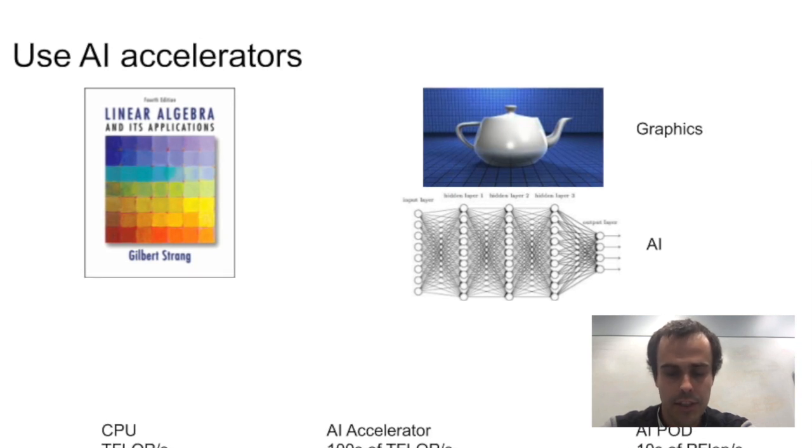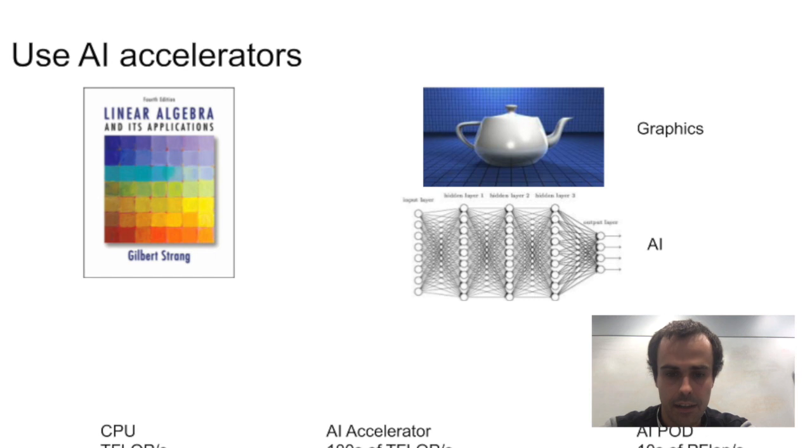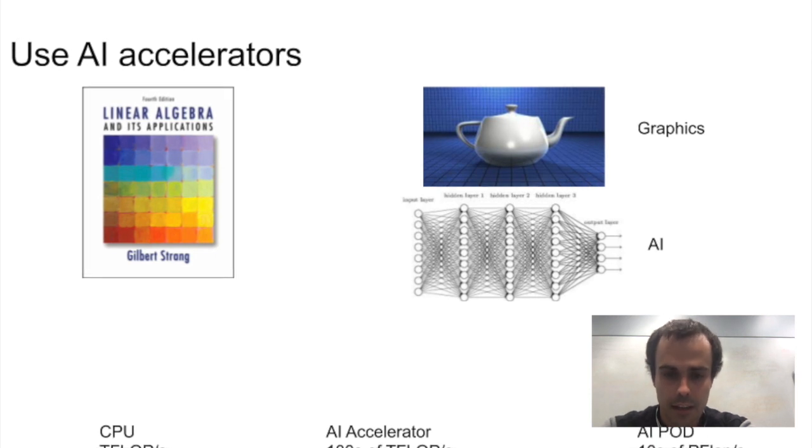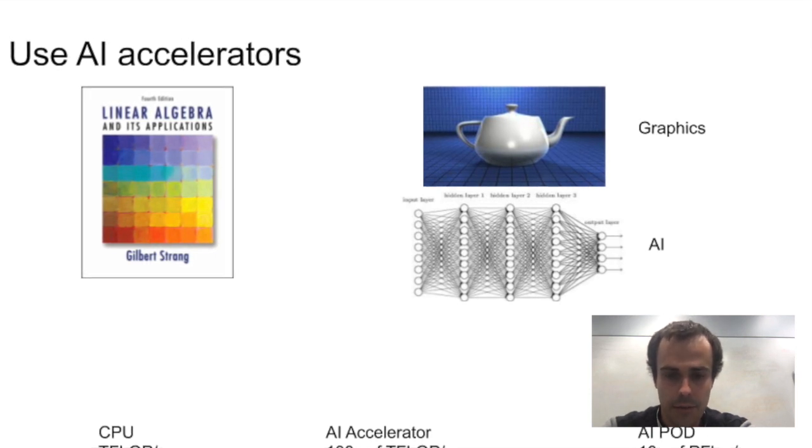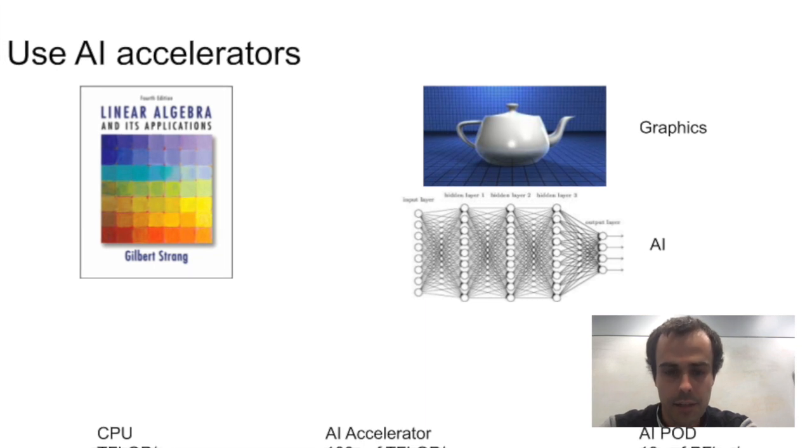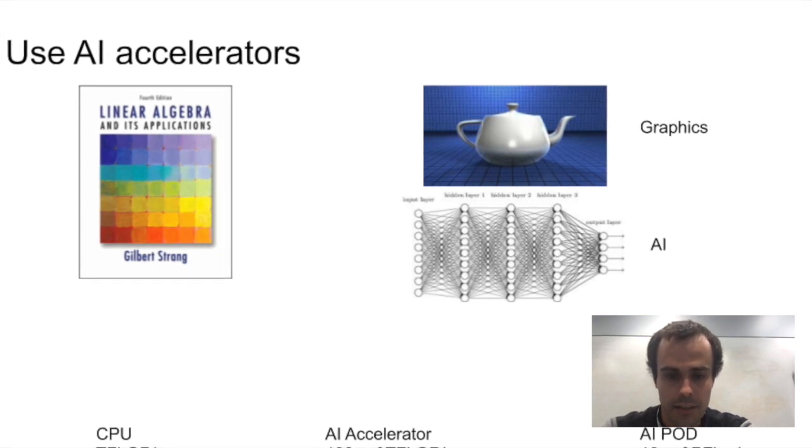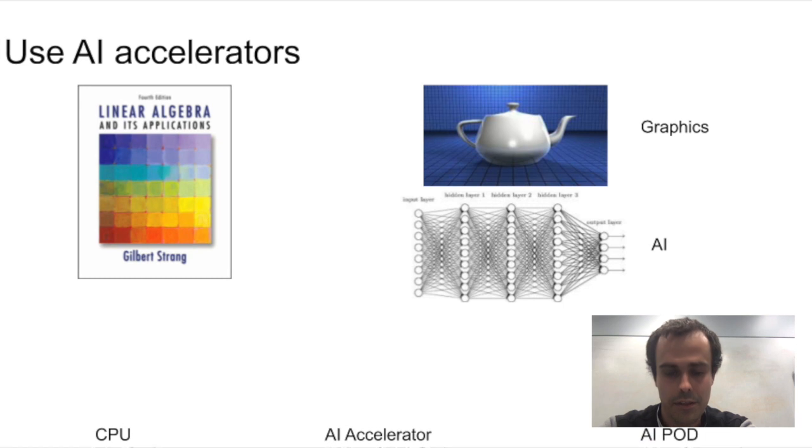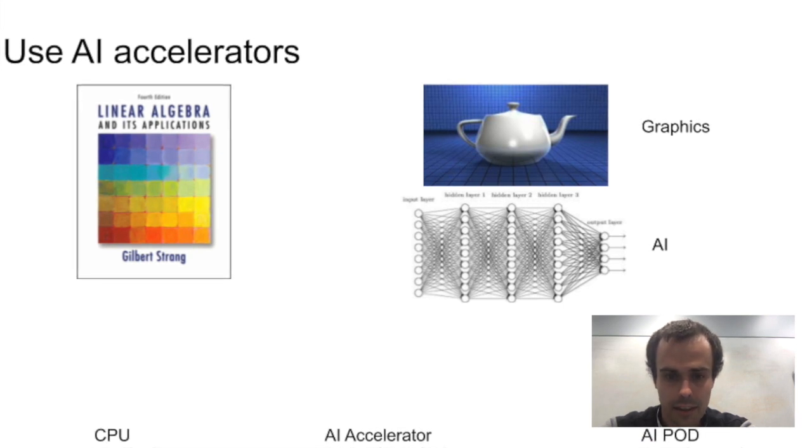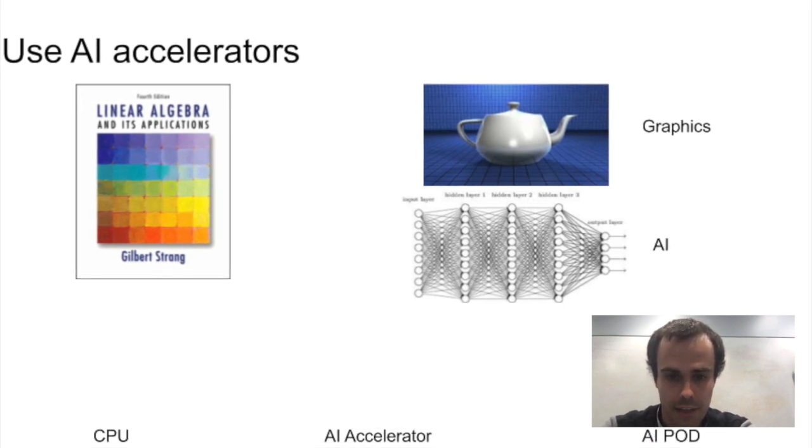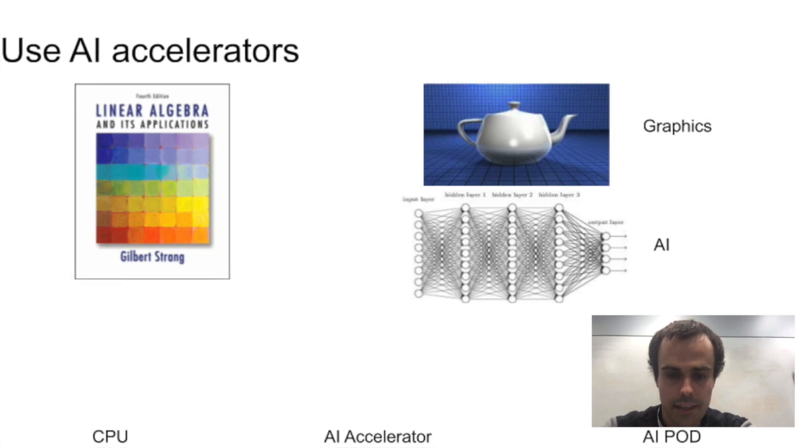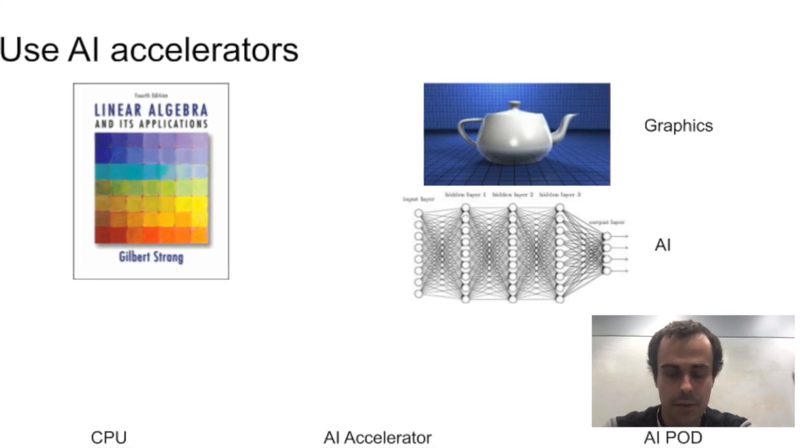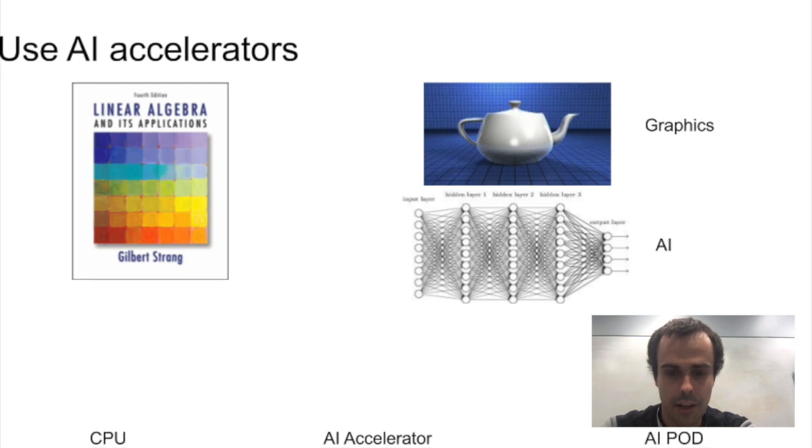And so when you put all these things together you can build AI accelerators like GPUs that are way faster than CPUs at running neural networks. So whereas CPUs might be able to run neural networks at single teraflops, like single trillions of operations per second, single AI accelerators like GPUs can be a hundred times faster so they can run at things like a hundred teraflops.